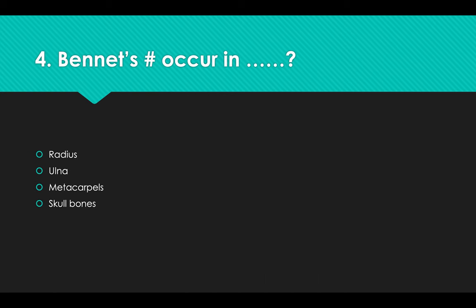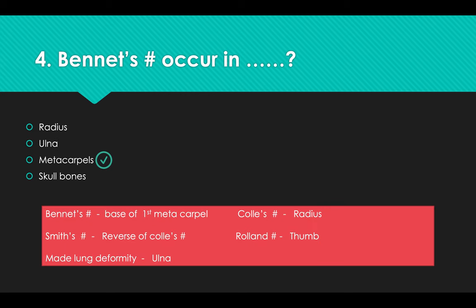Bennett's fracture — where does it occur? Options: A) Radius, B) Ulna, C) Metacarpals, D) Skull Bones. Answer: Option C, Metacarpals. Bennett's fracture is a fracture of the base of the first metacarpal. Additional facts: Colles' fracture = fracture of radius; Smith fracture = reverse of Colles'; Roland fracture = fracture of thumb; Madelung deformity = Ulna.